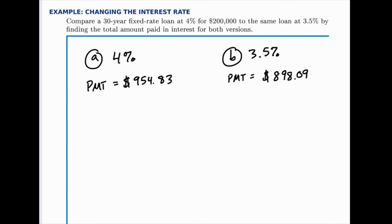Now that we know the payment amount for each option, we can figure out the total amount that we'll pay over the course of 30 years by simply taking that monthly payment amount times 12 in each case. That'll give us the amount paid in one year, and then multiply that by 30. That'll give us the amount paid in total over 30 years, and we can compare these two once we see that total.